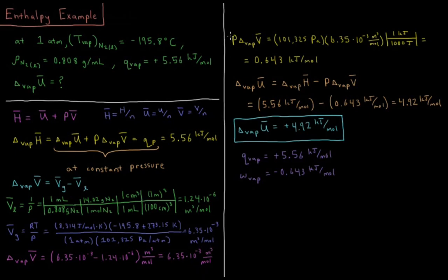So the pressure times the molar volume change of vaporization is 101,325 pascals, or 1 atmosphere, times 6.35 times 10 to the minus 3 meters cubed per mole, times 1 kilojoule per thousand joules, gives us 0.643 kilojoules per mole.